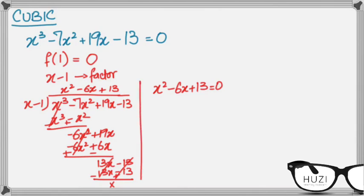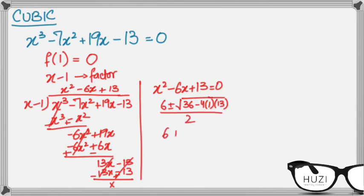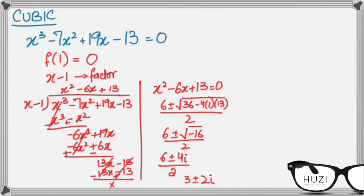Now I'll solve this quadratic equation to find the two complex roots using the quadratic formula. Minus b is minus minus 6, which is plus 6. Then minus b squared is minus 36, and minus 4ac is minus 4 times 1 times 13, giving minus 52. Upon 2a, I get 6 plus or minus the square root of negative 16, upon 2. This becomes 6 plus or minus 4i, upon 2, giving the two complex roots 3 plus or minus 2i. So the roots of the cubic equation are 1 and 3 plus or minus 2i.